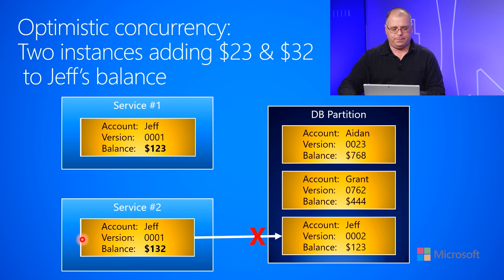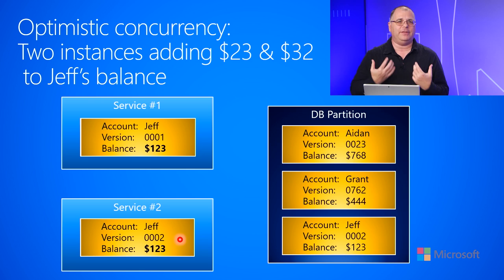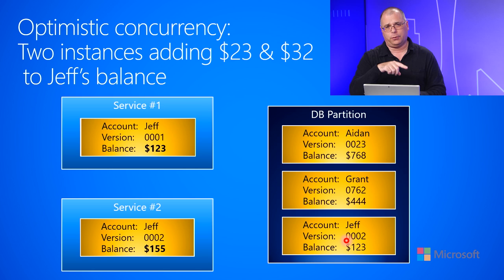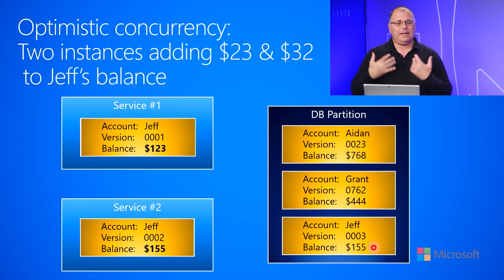When the database says no, it also returns the latest information back to service two. Service two is told: the latest information is version two and we have $123. Service two gets this as its new starting point and retries its operation — it adds $32 to $123, which makes it $155. Service two sends this back to the database with version two. The database says: the last information you had was version two, and the current information I have is version two, meaning you were operating with the latest information. So I will accept your change. Now we're at version three with $155 in the account.